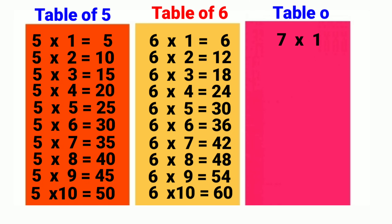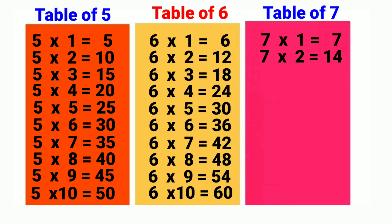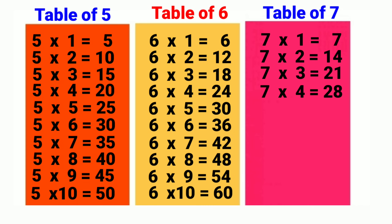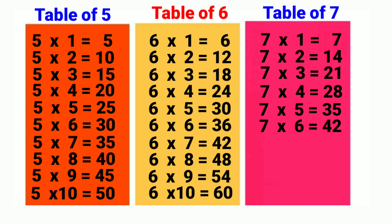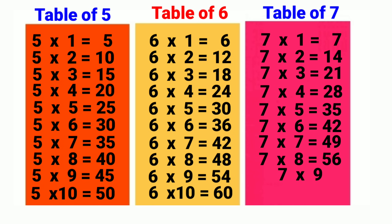7, 1's are 7. 7, 2's are 14. 7, 3's are 21. 7, 4's are 28. 7, 5's are 35. 7, 6's are 42. 7, 7's are 49. 7, 8's are 56. 7, 9's are 63. 7, 10's are 70.